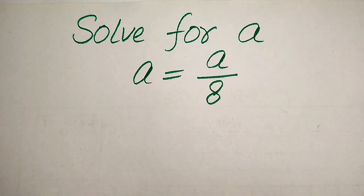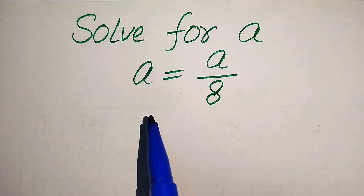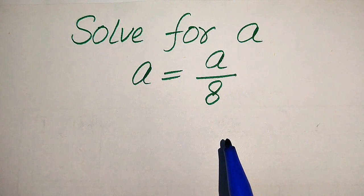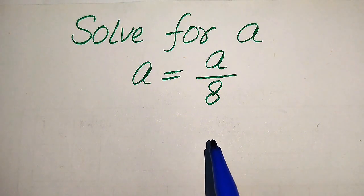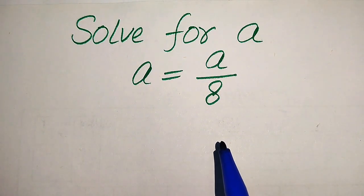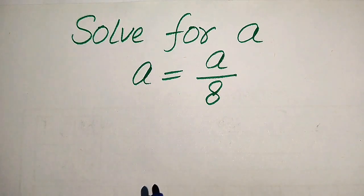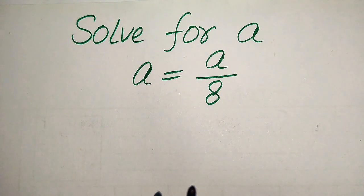Hello everyone. How to solve this problem for the values of a, if we have a is equals to a divided by 8. First we find all the roots of this equation, and at the last we will check which of the roots are solutions of this equation and which of the roots are extraneous roots.